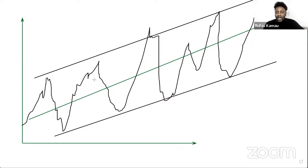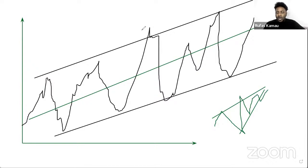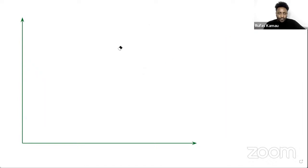The default market pattern you're going to observe almost every other time is what you call a channel. In a channel, the market performs higher highs along a trend line and higher lows, and the two trend lines will be parallel to each other. Remember, it's not on you to impose a channel — you only draw the trend lines. If the two lines tend to be parallel, that's when you identify you have a channel. If the two trend lines are approaching each other, that's not a channel — you have a completely different kind of chart pattern.